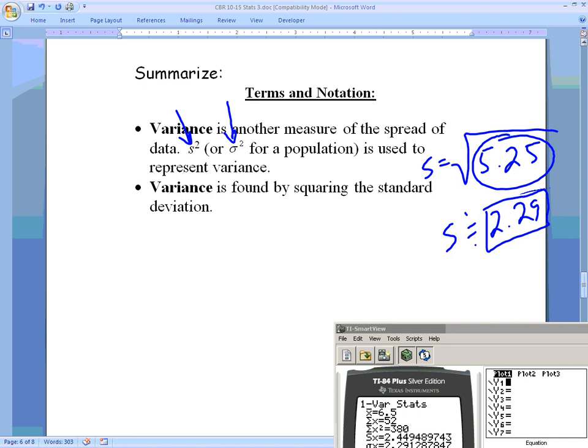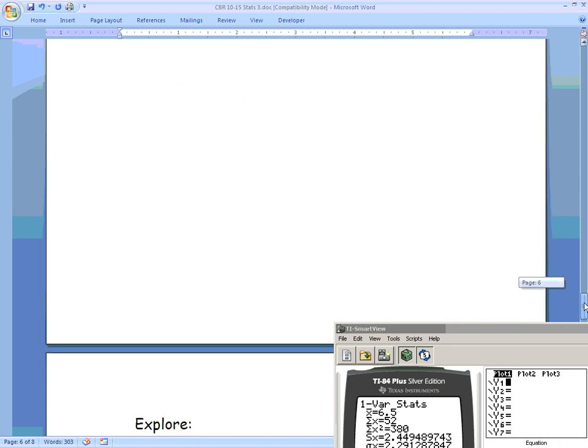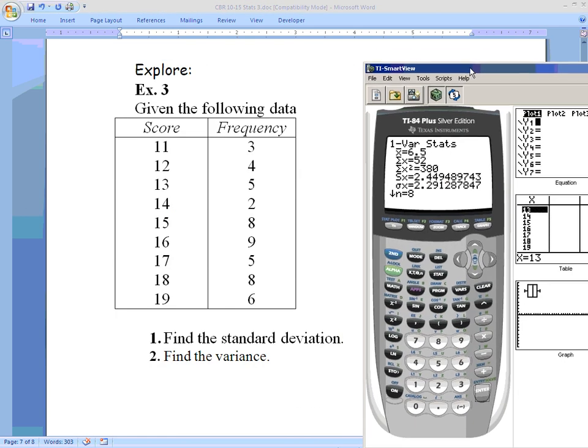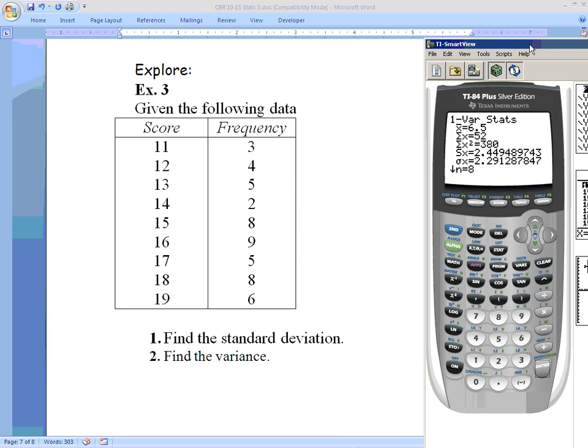Last example, we'll do one now that has frequencies involved. There's a formula for it, you're welcome to try this with the formula, but I am going to make life a little bit easier and go straight to the calculator. For my list one, I'm entering in all of my data: 11, 12, 13, and so on. And then in my second column I'm going to put in all of my frequencies: 3, 4, 5, 2, 8, 9, and hopefully you are playing along as I do this and typing them in as well.